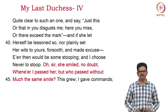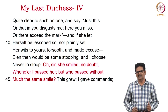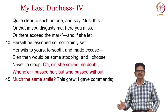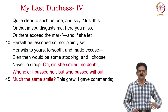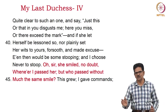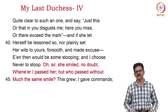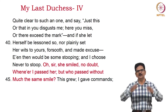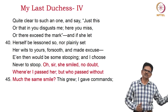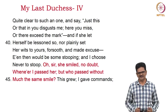The second extract: 'Quite clear to such an one, and say, just this or that in you disgusts me, here you miss, or there exceed the mark. And if she let herself be lessoned so, nor plainly set her wits to yours, forsooth and made excuse, even then would be some stooping, and I choose never to stoop. Oh sir, she smiled, no doubt, whenever I passed her, but who passed without much the same smile?' This grew — I gave commands. The duke had killed his duchess and got her painted. He has this painting of the duchess, and this painting is shown to the envoy who has come to negotiate the wedding for the new duchess and the duke.